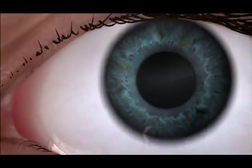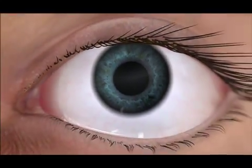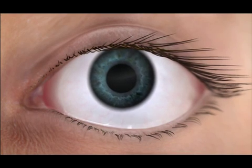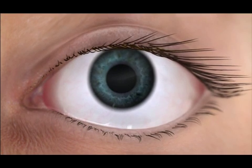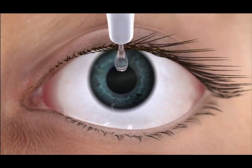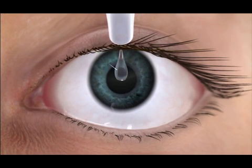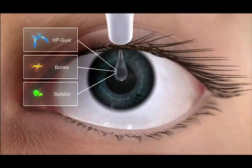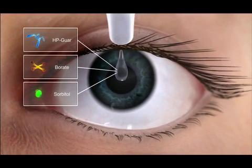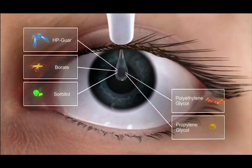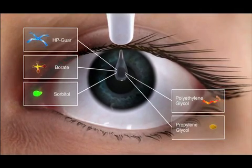In treating ocular surface disease, a therapy that allows the ocular environment to return to normal is the first step. The intelligent delivery system of Cystain Ultra, consisting of HP-GUAR, borate and sorbitol, enables the ingredients polyethylene glycol and propylene glycol to lubricate and provide protection.